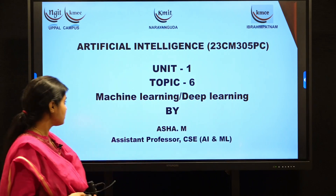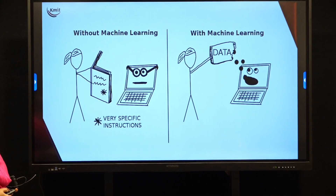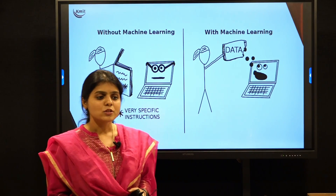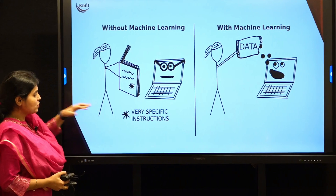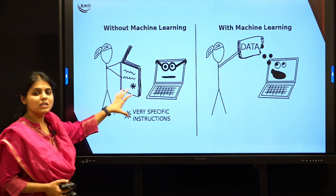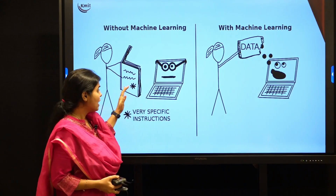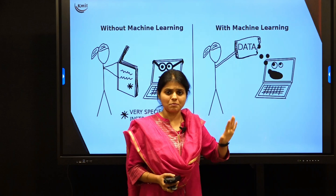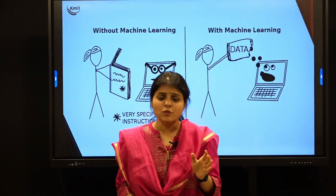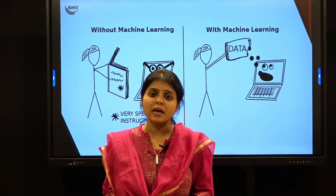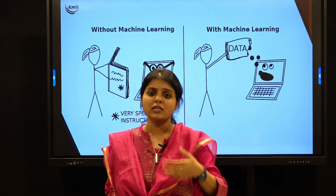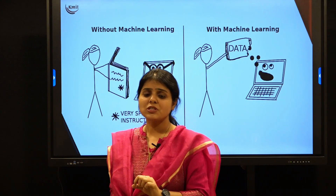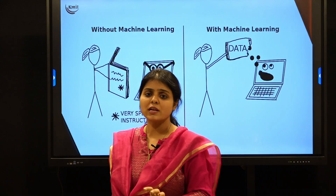When we talk about traditional programming, we learn specific instructions, understand them, and feed them as a program — we write those instructions and give that program to a computer. But with machine learning, we give the machine the ability to understand the data. For example, in C language, if I want to sort numbers in an array, we write step-by-step instructions — that is called explicit programming. But in machine learning, we feed the data to the machine.